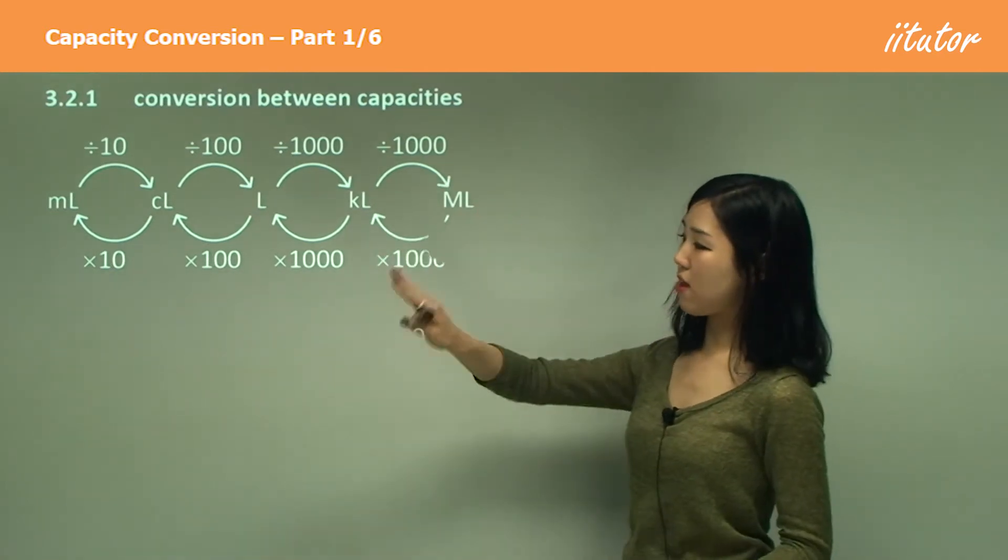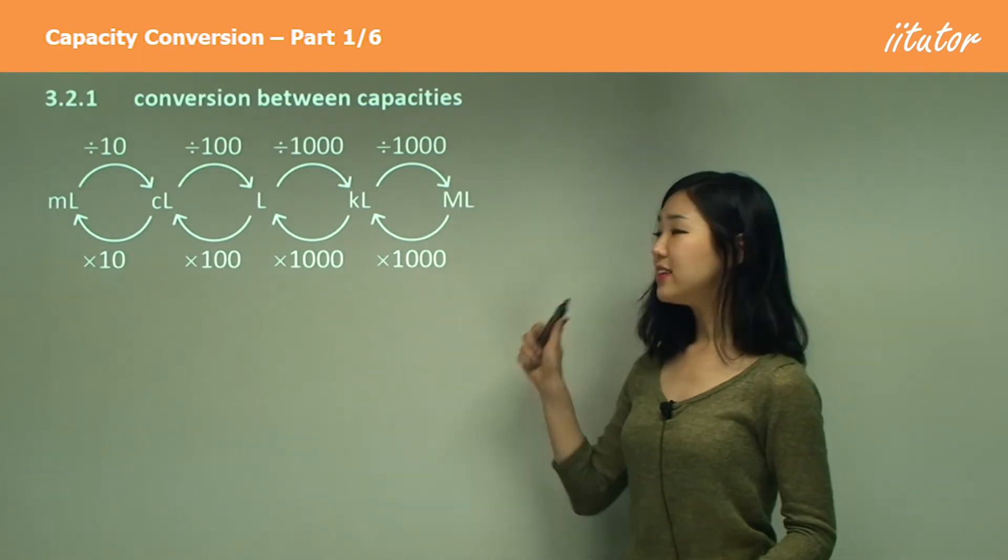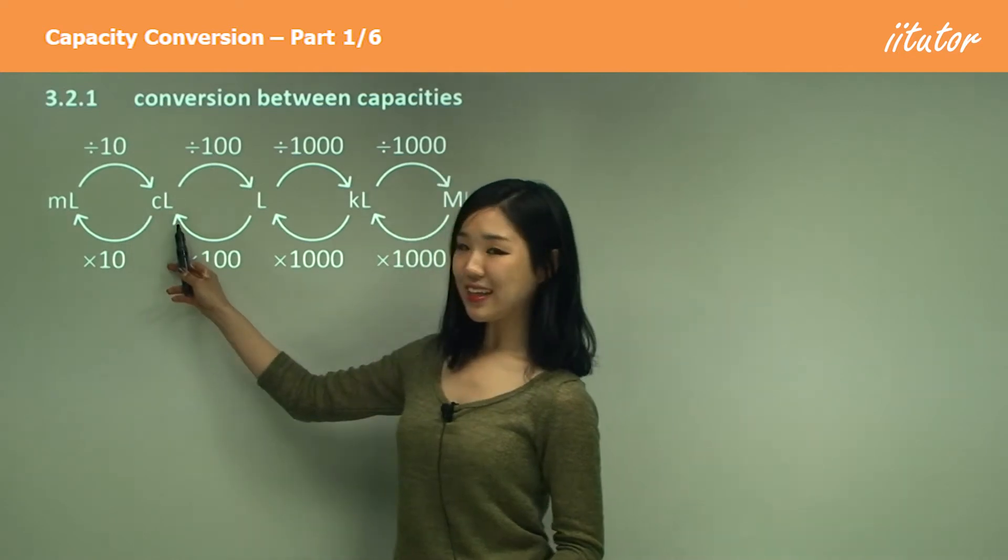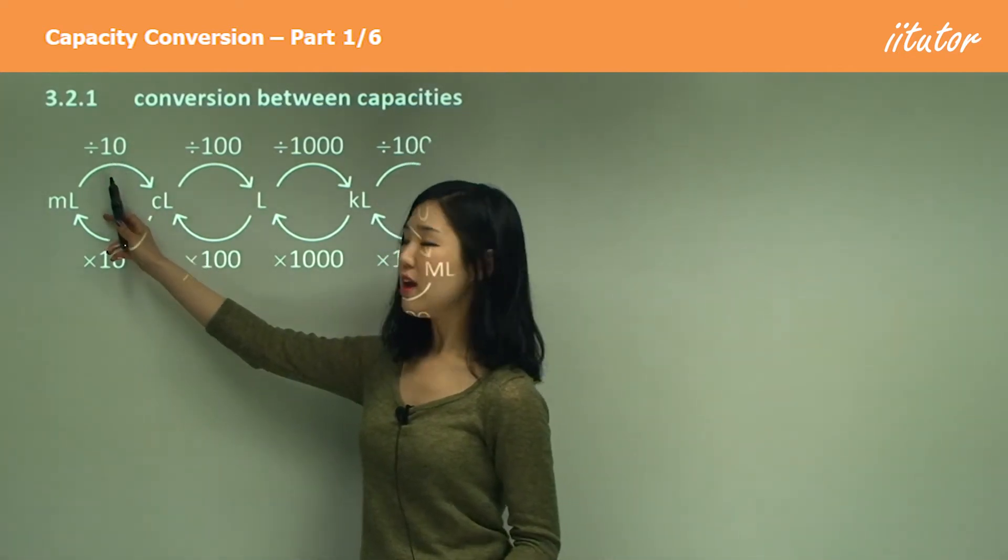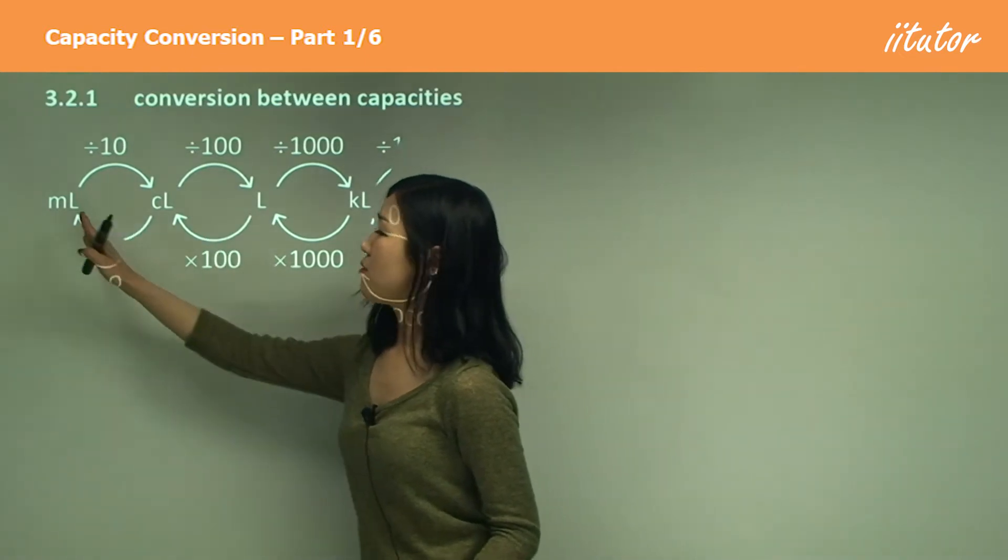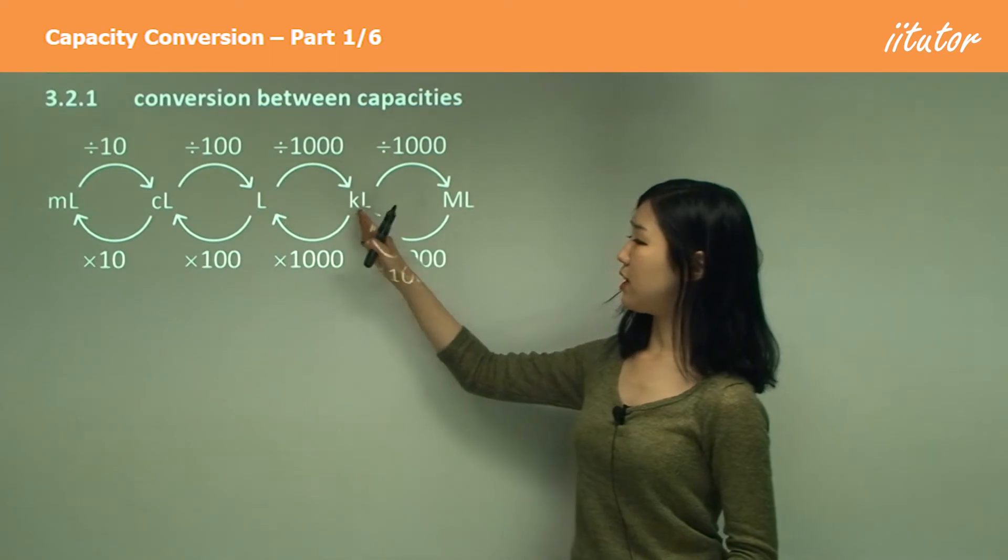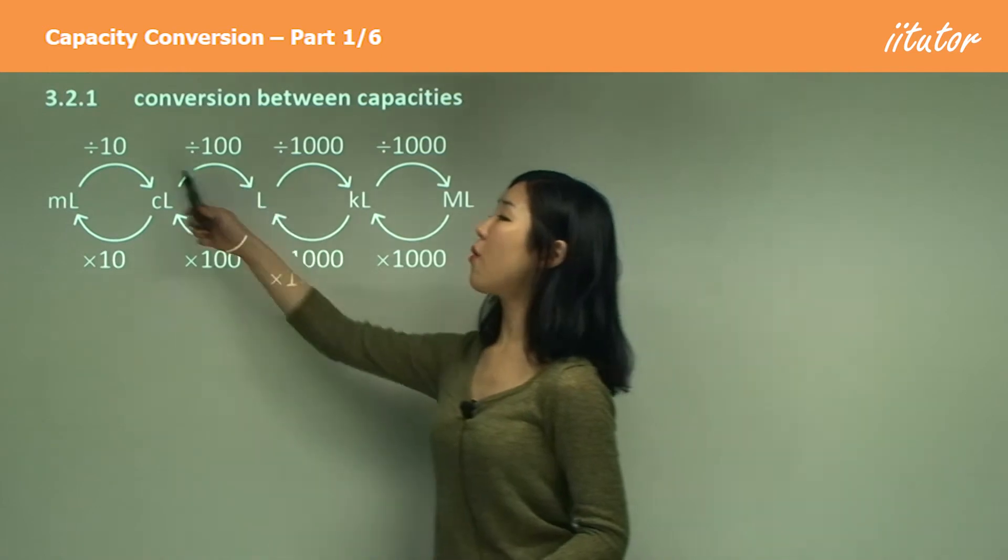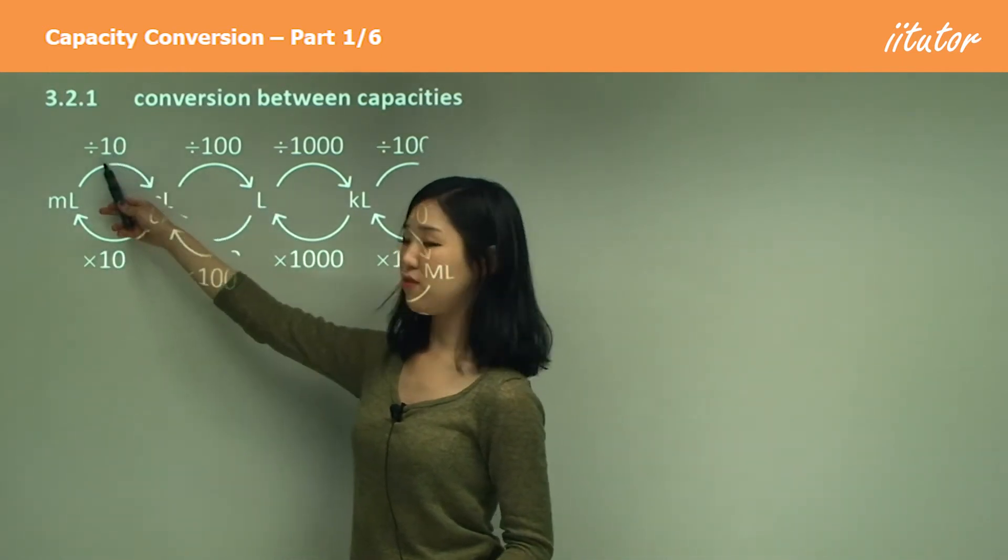Watch carefully. If I'm going from milliliters to centiliters, we divide by 10. The idea is this: from small to large. When going from a smaller unit to a larger unit, we always divide. Small to large is division.